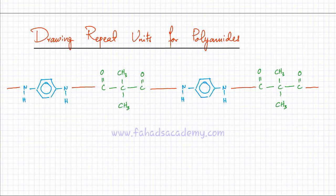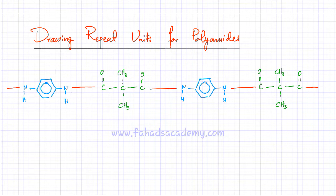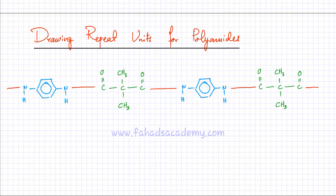I'm going to try and draw repeat units for polyamides. This is one polyamide that we did as an example. So this is a polyamide — it has a carbonyl bond C=O and N-H; these are amide links. You have these amide links: C=O, N-H, C=O and N-H. So you have all these amide links. These are polyamide — it's a polyamide chain.